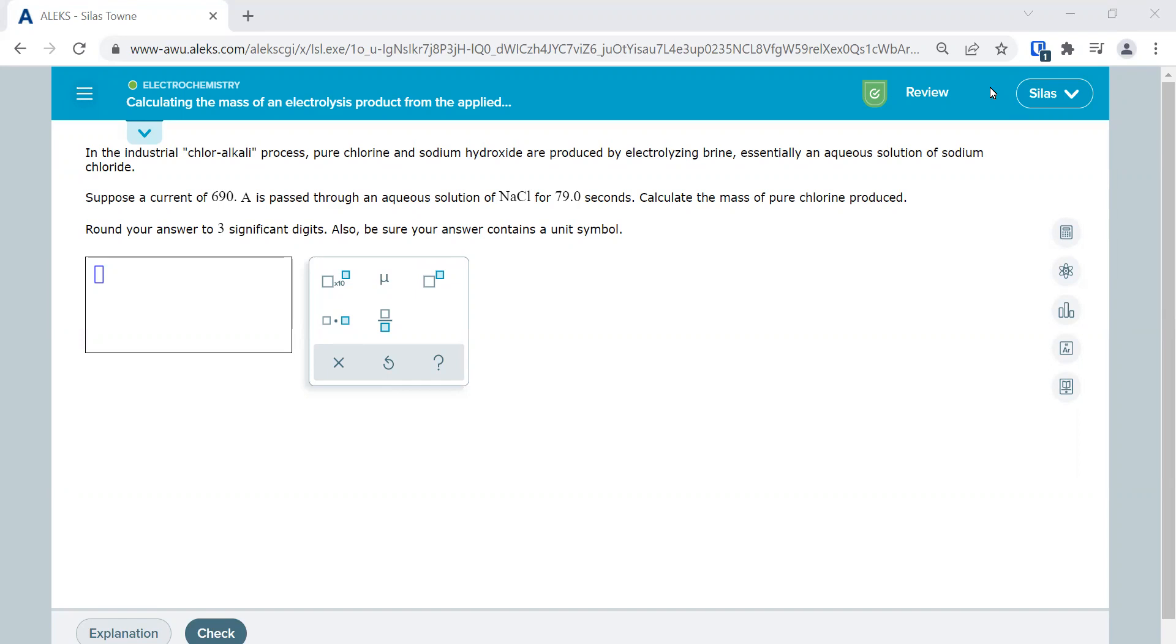In this problem, we'll look at generating some chlorine gas from sodium chloride or brine. And so the overall reaction here that we're looking at is NaCl reacting with the water to form Cl2 gas, some hydrogen gas, and NaOH.